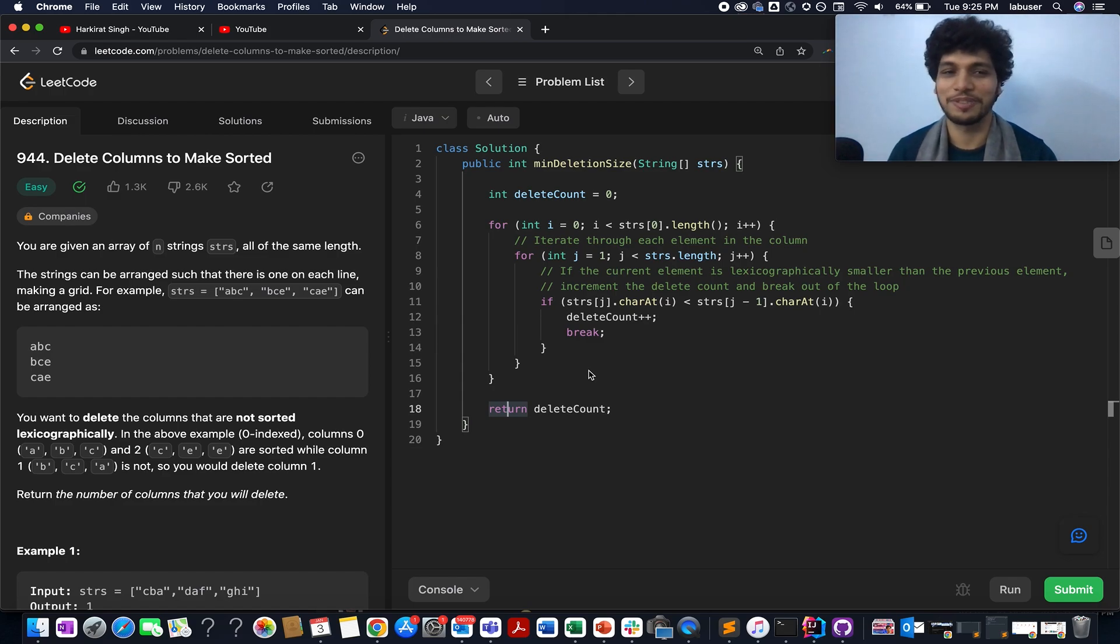In this question, you are given an array of strings and all the strings are of same length. You need to arrange them in a form of a matrix and iterate them in a column-wise fashion, and check whether each column happens to be lexographically sorted or not. If that column is not lexographically sorted, then you need to delete that column.